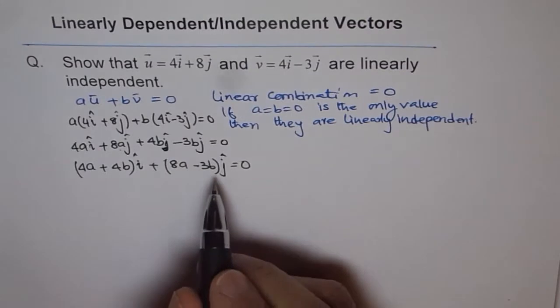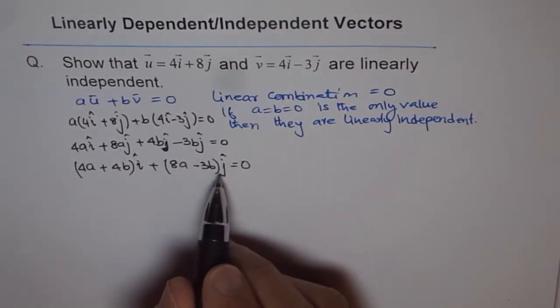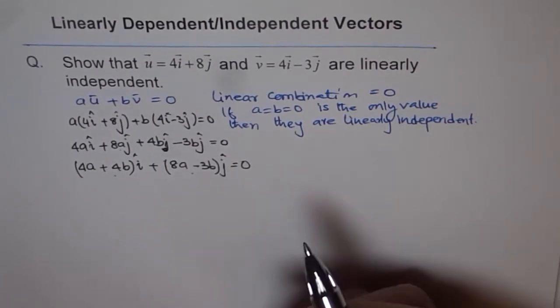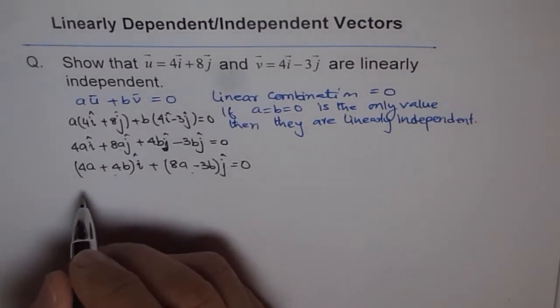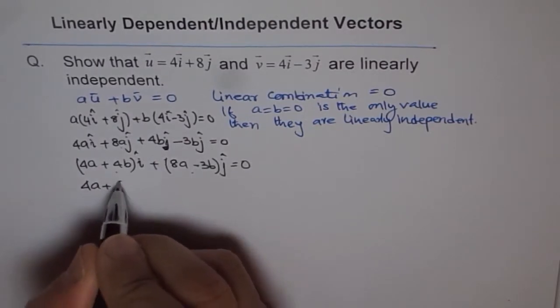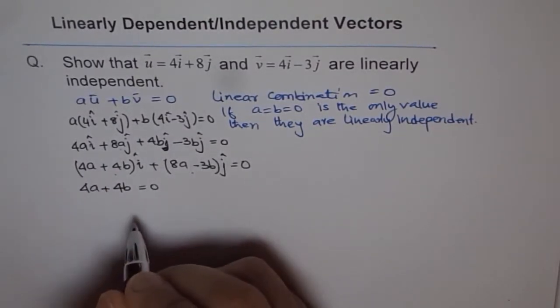Now we know i and j are unit vectors; they cannot be 0. Now since they cannot be 0, then these factors should be 0 to make this equation true. So we can equate 4a plus 4b equals 0, that gives me one relation.